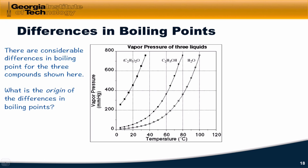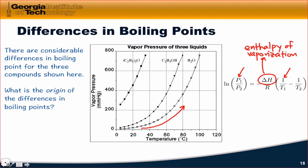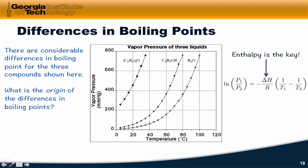To close this video, let's return to the graph of vapor pressure as a function of temperature. There are considerable differences in boiling points for the three compounds shown. As chemists, we want to appreciate the molecular origin of these differences. In the Clausius-Clapeyron equation, the pressures and temperatures don't necessarily depend on molecular identity. The only piece of the equation that differs between substances is delta H — the enthalpy of vaporization. So what we really want to appreciate is the molecular origin of delta H of vaporization: what causes water to have a larger enthalpy of vaporization than, say, diethyl ether?